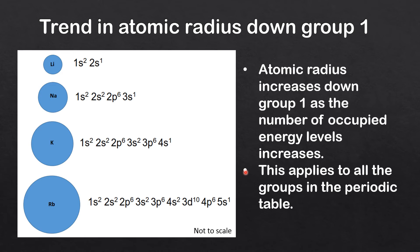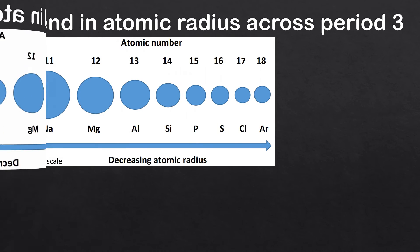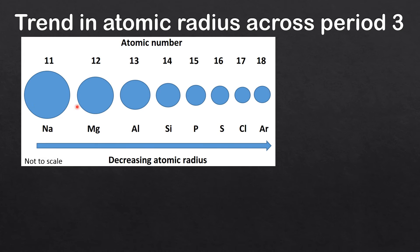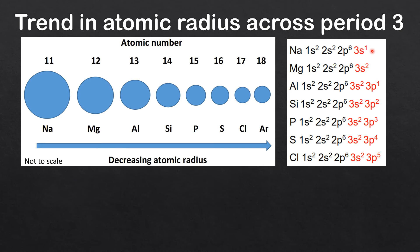As you go down a group the number of occupied energy levels increases and so does the atomic radius. Looking at the reasons for the decrease in atomic radius across a period, in period three from sodium to chlorine — excluding the noble gas argon — the atomic radius decreases. The atomic number increases by one as you go across a period, so nuclear charge increases from left to right. The electrons are being added to the same main energy level, which is n = 3.